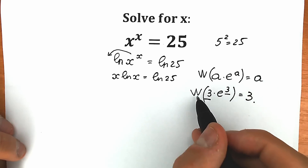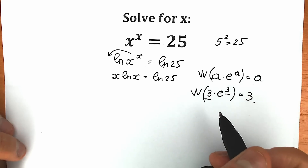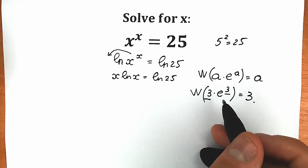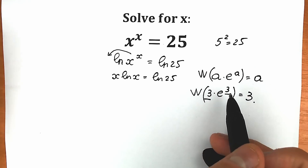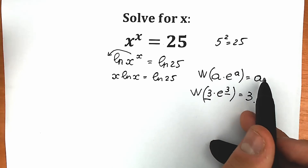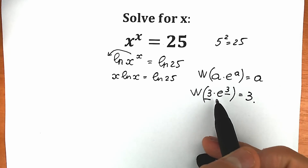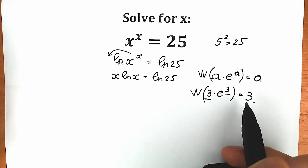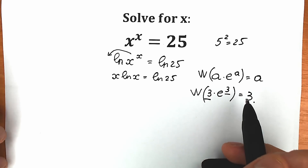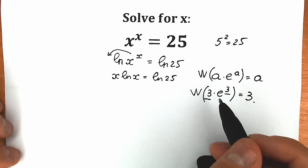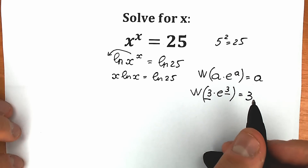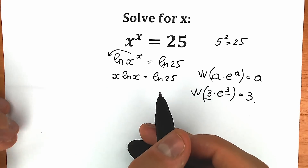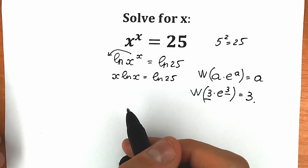I hope you understand this Lambert W function. So when we have a times e to the power a, the Lambert W function gives us a. But if you look closely at the left side, we don't have e, so we need to create this e right here.